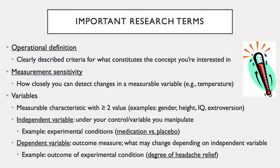In an example research study exploring the use of a pain reliever for a headache, the experimental condition would be the group given the pain reliever compared to the group not given the pain reliever. The independent variable is whether the individual is given the pain reliever or a placebo, such as a sugar pill — an inert substance used to reduce the likelihood of self-fulfilling prophecies. The dependent variable is the outcome measure — what the researcher is measuring to see if there was a change dependent on the independent variable. A helpful way to remember this is that the dependent variable depends on the independent variable.